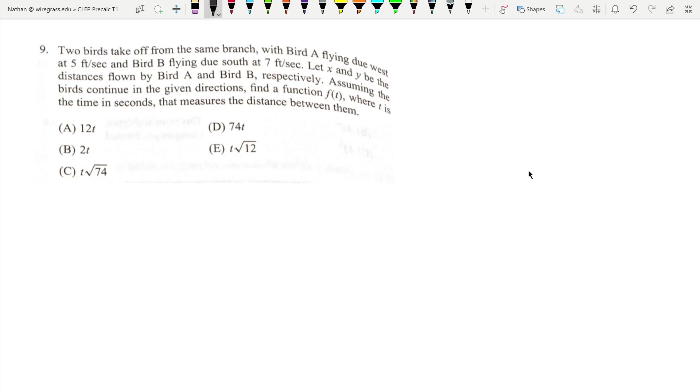We've got two birds taking off from the same branch. Let's make this the branch here. And bird A flies due west five feet per second, and bird B flies due south at seven feet per second.